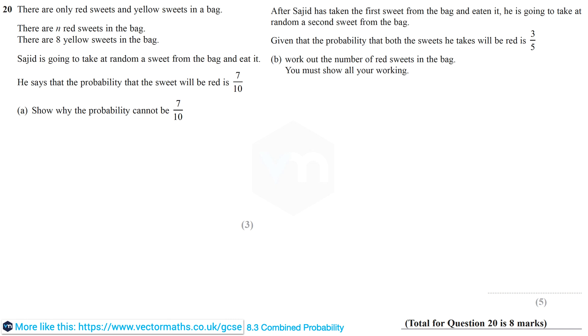So we'll start by supposing that he's correct. Now firstly, since there are N red sweets there must be N plus 8 sweets in total in the bag. So the probability of obtaining a red sweet is equal to N over N plus 8. And since we know this is equal to 7 tenths, we can write N over N plus 8 equals 7 over 10.